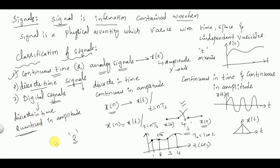In the upcoming classes we are going to discuss more about continuous time signals and discrete time signals in signals and systems. Digital signals are covered in communications, which we discuss later. Our area of interest will be on the analysis of continuous time signals, continuous time systems, discrete time signals, and discrete time systems in the subject signals and systems.